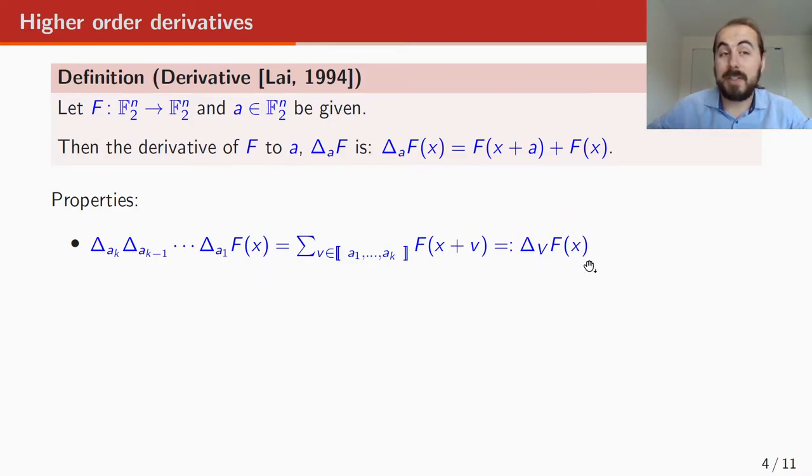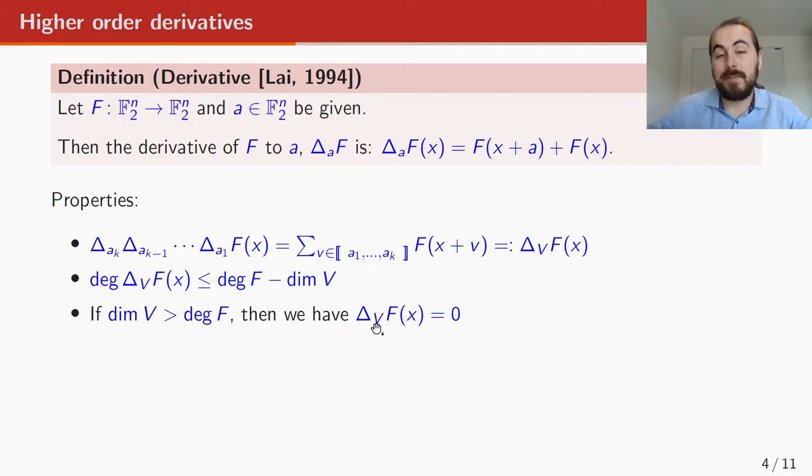So if we investigate this multiple derivative, which is actually higher order derivative of f, then its degree is bounded by the degree of f minus the dimension of V. So if this dimension of V is large enough, then this will become at most zero or maybe at most negative, and at most negative means that this is just the zero function. So if the degree of V is larger than the degree of f, then the derivative of f with respect to V is zero.